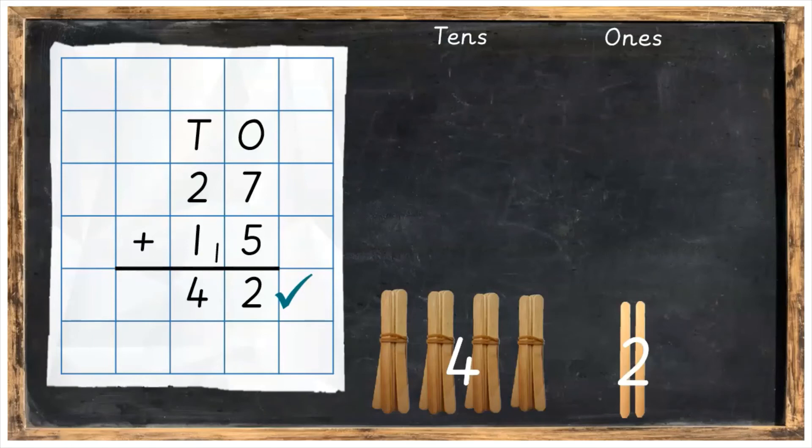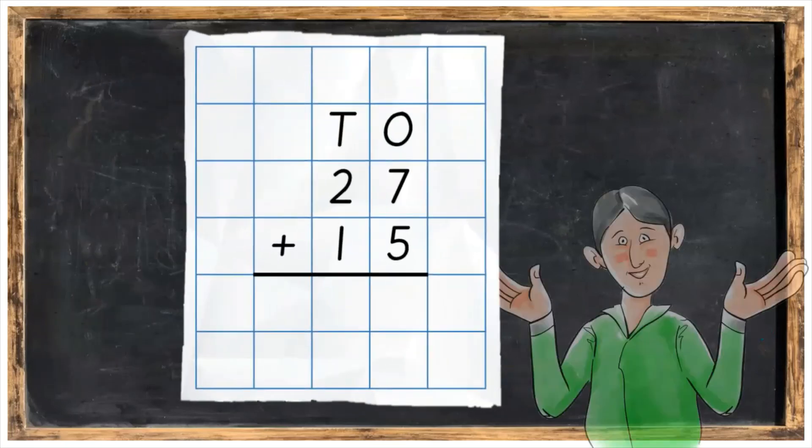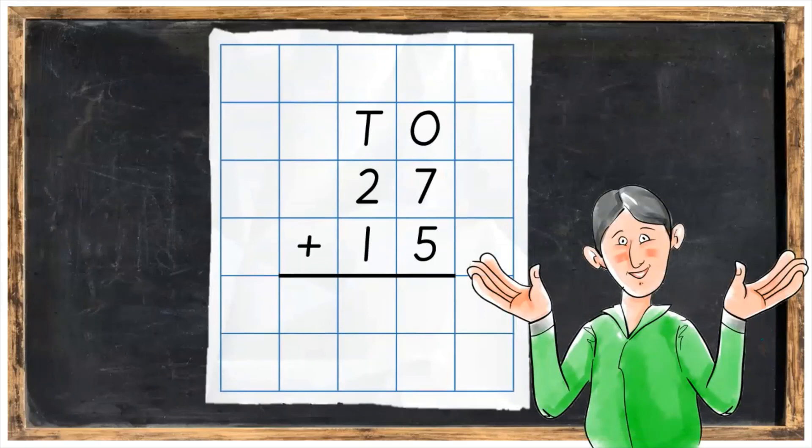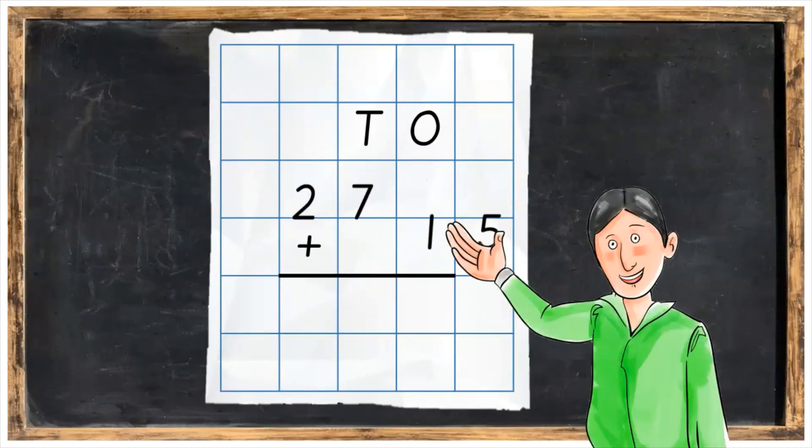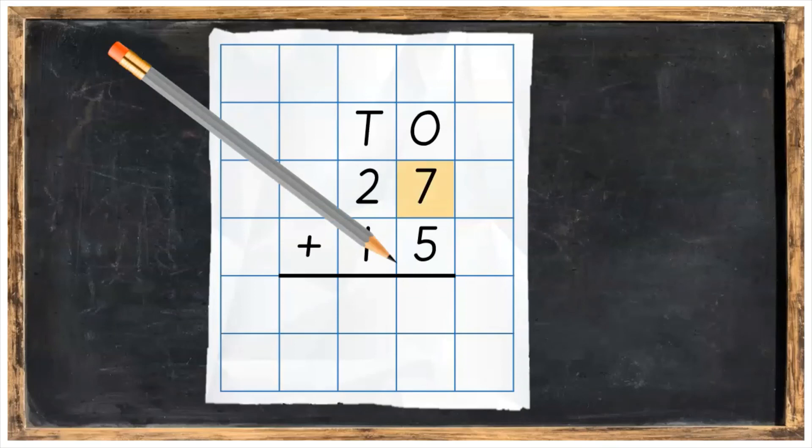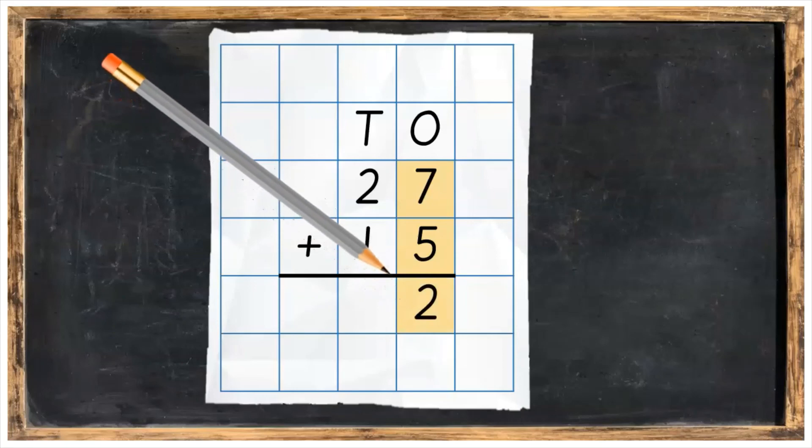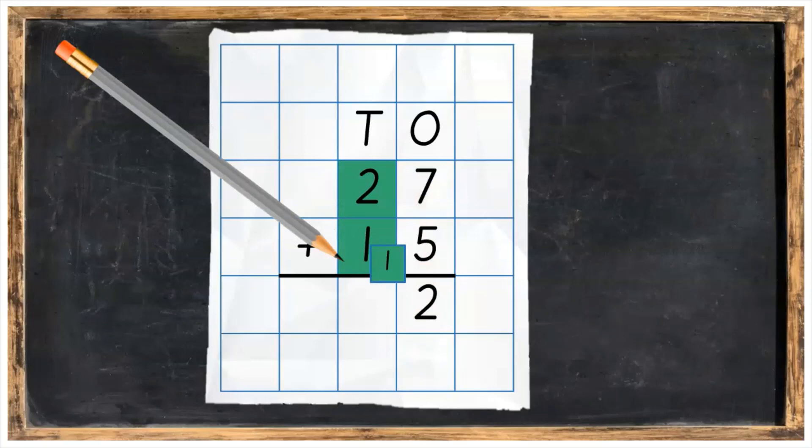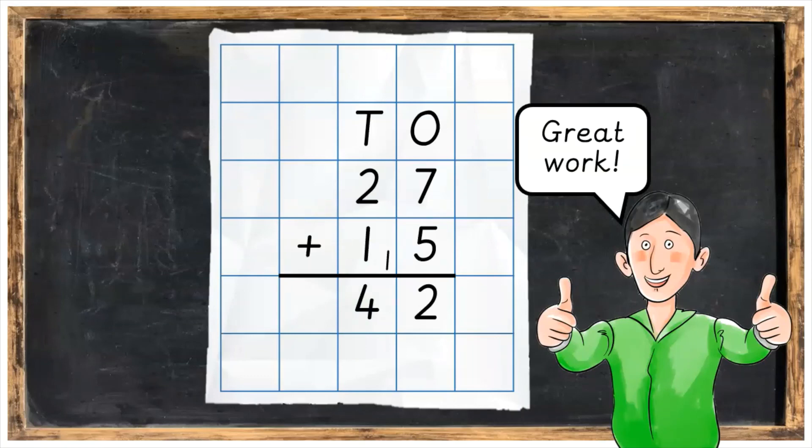So by now you should have 42 on your sum and you should have 42 in your lollipop sticks. And that's how we do any addition sum. It doesn't matter if the numbers on top are bigger or smaller. Let's run through that one more time just for our recap. So we had seven ones plus five ones, which gave us 12. So we put down our two and we carry over the one. And then in the tens column we had two tens, plus one ten, plus the one ten we carried over, which all together gave us four tens. And that's the final answer. Great work!